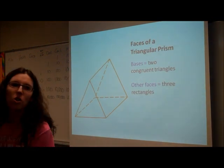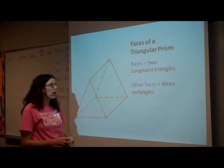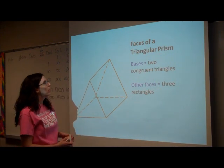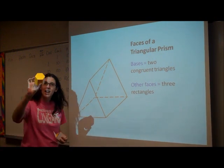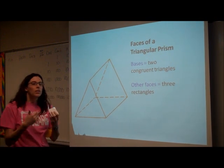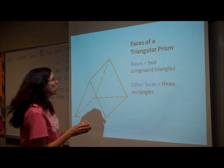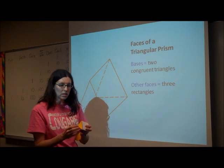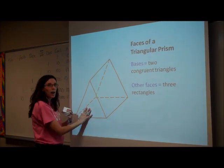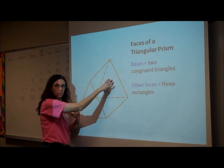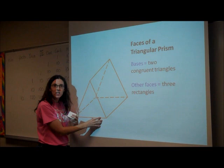This time we're going to look at non-rectangular prisms. Here's an example of a triangular prism. I also have a hexagonal prism here. But remember, any time you have a prism that is not a rectangular prism, you're going to have two bases that are not rectangles. So with the triangular prism, I have these two triangles. All of the rest of my faces are rectangles.